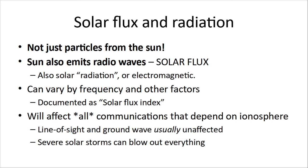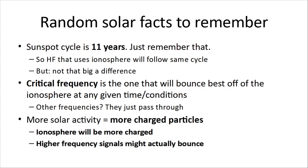Line of sight and ground waves — the close stuff, like FM going 100 to 200 kilometers — is usually unaffected. But severe solar storms can blow out everything, even power lines. About 20 years ago, most of Quebec's power grid was taken down by a severe solar storm. Some additional random solar facts to remember: the sunspot cycle is 11 years — remember that for the test. HF that uses the ionosphere will follow the same cycle, though the difference isn't huge. People who really go for DX — maximum distance at lowest power — track this stuff because it affects them.